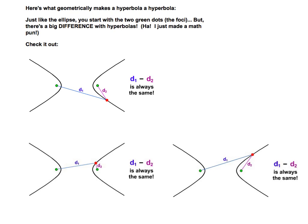The cool math website shows it in kind of a similar way, and they're really funny too, which as a math person, I love their humor. It says, here's what geometrically makes a hyperbola a hyperbola. Just like the ellipse, you start with two green dots, the foci, but there's a big difference, there's all sorts of subtraction. Basically when you take the length from that point to one focus and that point to the other focus and you subtract it, it's always the same.